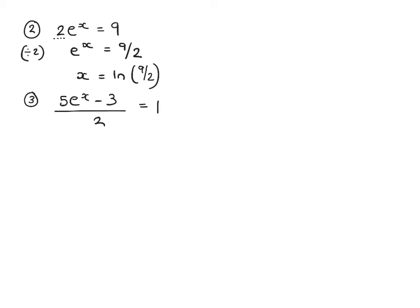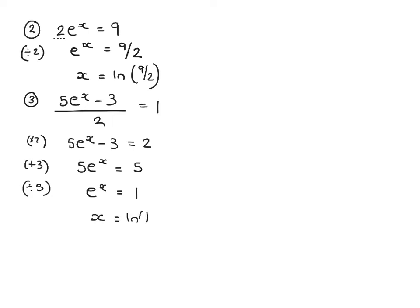For a more complex example, we cannot take logs until we rearrange. Multiply by 2: 5e to the x subtract 3 equals 2. Add 3: 5e to the x equals 5. Divide by 5: e to the x equals 1. We should know that x equals 0, since e to the 0 equals 1. We can also write x equals ln of 1, but that result should be known.